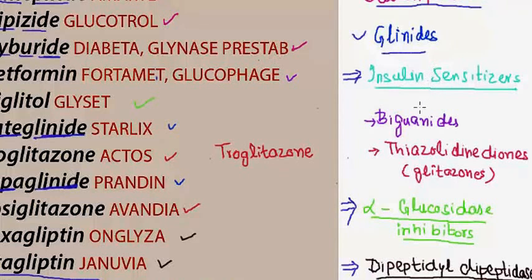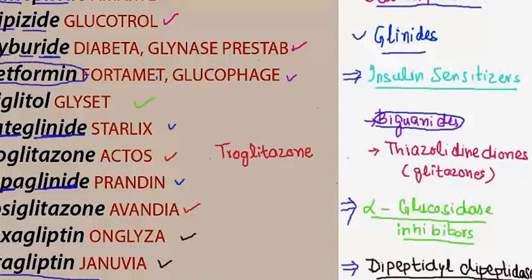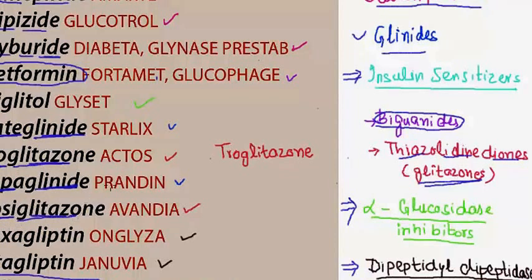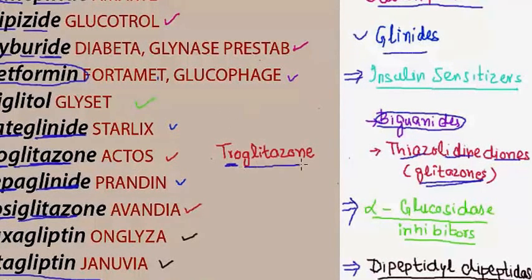Then come the insulin sensitizers. In the insulin sensitizers we have biguanides, and the one important commonly used drug in biguanides is metformin. Then are the thiazolidinediones, which are also called glitazones. In the glitazones we have three: pioglitazone, rosiglitazone, and troglitazone.